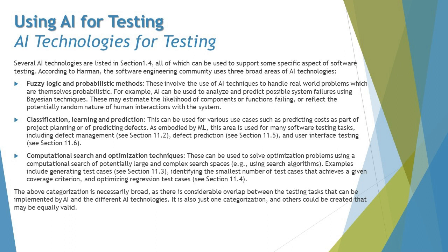According to Harman, the software engineering community uses three broad areas of AI technology: fuzzy logic and probabilistic methods; classification, learning and prediction; and computational search and optimization techniques. We have already discussed this in detail in chapter one. If you want more information, visit section 1.4 for a deep dive.